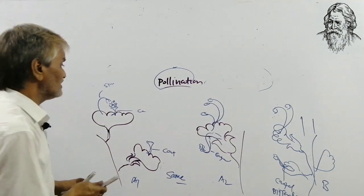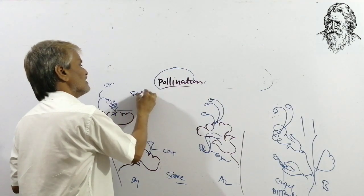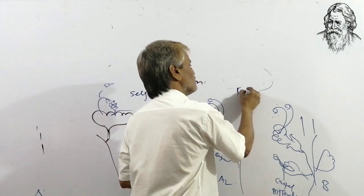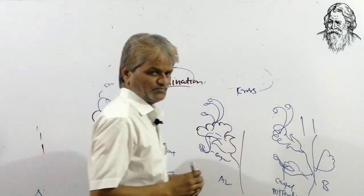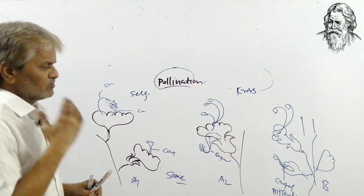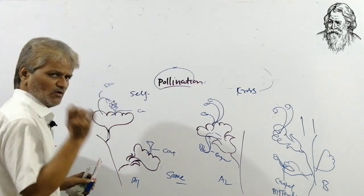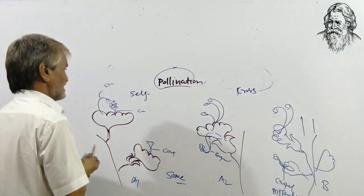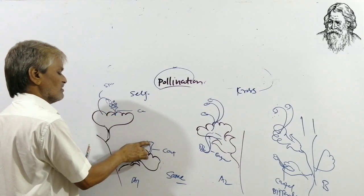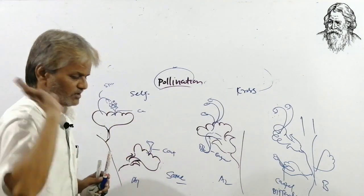Self-pollination: transfer of pollen grains from the anther to the receptive stigma of the same flower, or another flower present on the same plant, is called self-pollination.